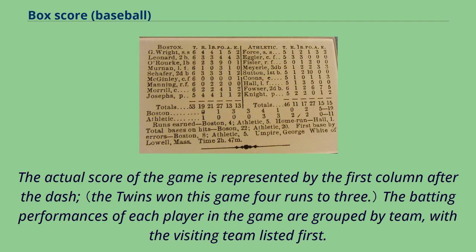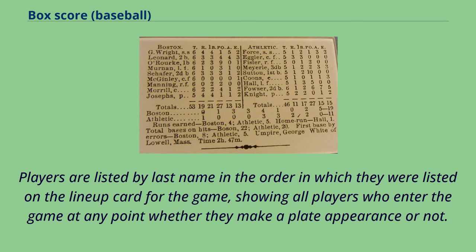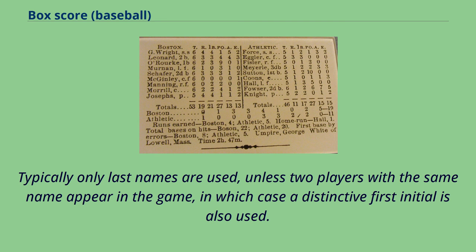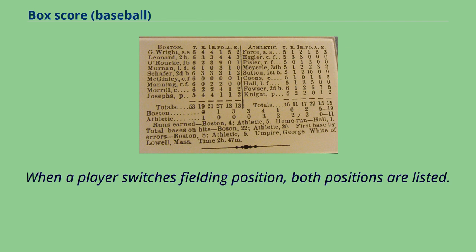The actual score of the game is represented by the first column after the dash. The batting performances of each player in the game are grouped by team, with the visiting team listed first. Players are listed by last name in the order in which they were listed on the lineup card for the game, showing all players who enter the game at any point whether they make a plate appearance or not. Their fielding positions or batting roles are normally listed next to their last name. Typically only last names are used, unless two players with the same name appear in the game, in which case a distinctive first initial is also used. When a player switches fielding position, both positions are listed.